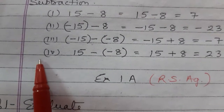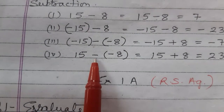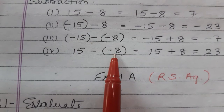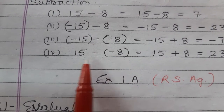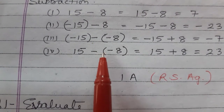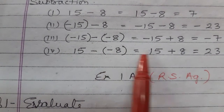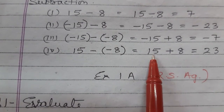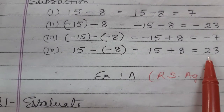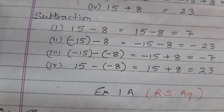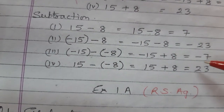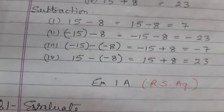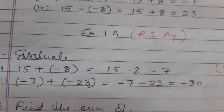The fourth example: 15 minus minus 8 — one of the integers is negative. After removing the bracket, minus into minus becomes plus. So it is 15 plus 8 and you get the answer 23. This is the difference between addition and subtraction for integers.